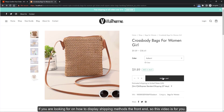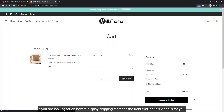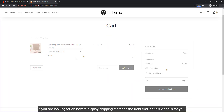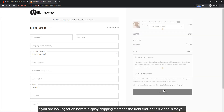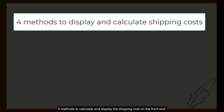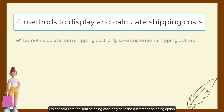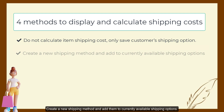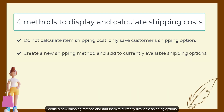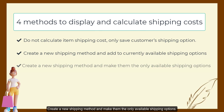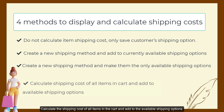If you are looking for how to display shipping methods on the front end, this video is for you. There are four methods to calculate and display the shipping cost on the front end: do not calculate the item shipping cost but only save the customer's shipping option; create a new shipping method and add it to currently available shipping options; create a new shipping method and make it the only available shipping option; or calculate the shipping cost of all items in the cart and add it to the available shipping options.